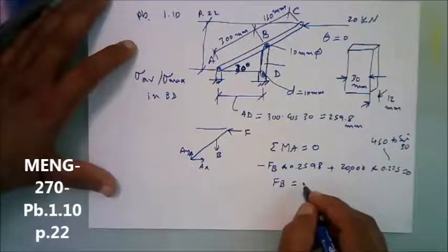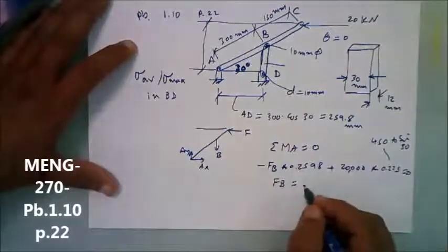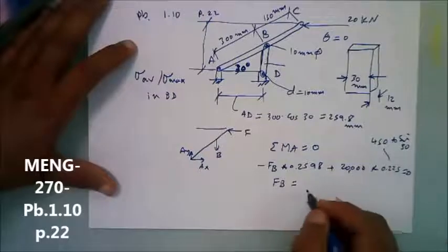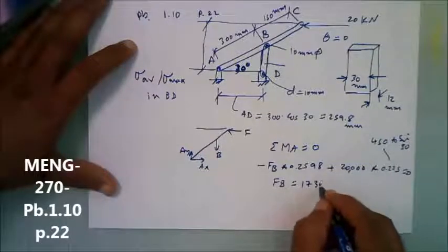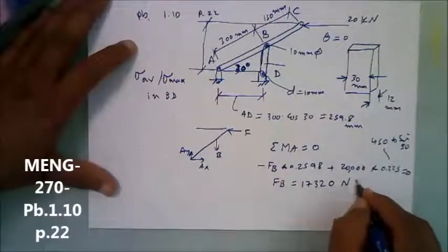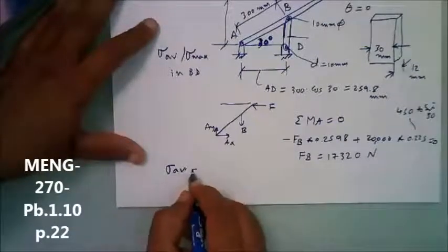Minus 17,000. Why is minus? I'll take the minus out of here. FB is 17,320 Newton.